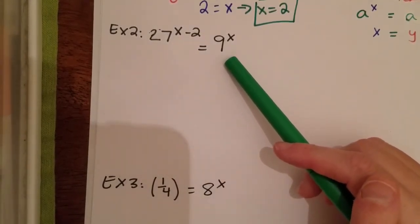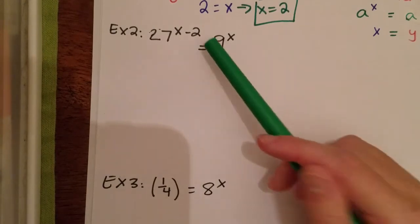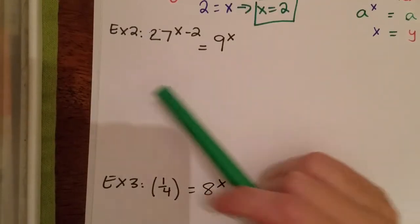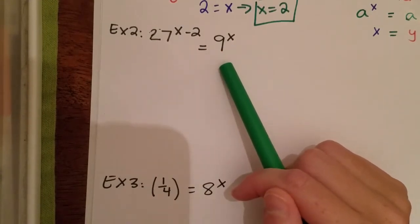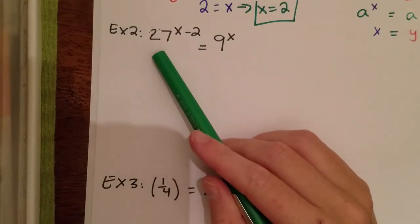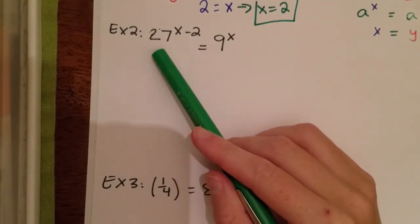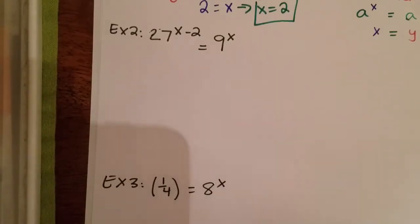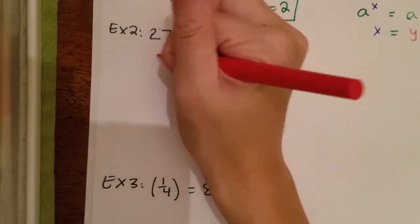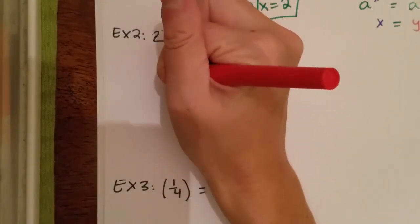So let's think of a number that goes into 27 and 9. Your first thought might be 9, but I need to be able to raise it to a power to get both 27 and 9. Well, 9 to the second power gives me 81, so that doesn't work. We have to think of a different number — and that is 3.